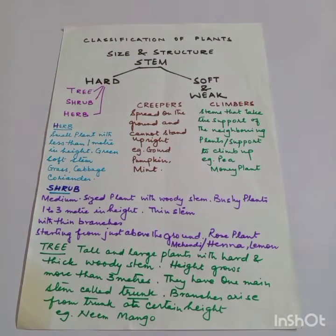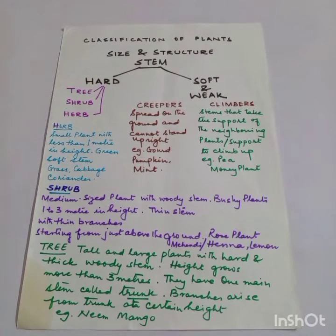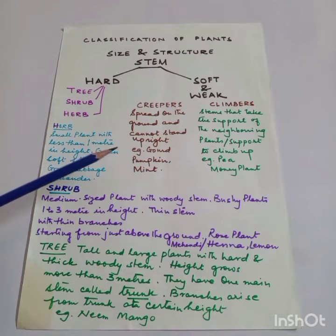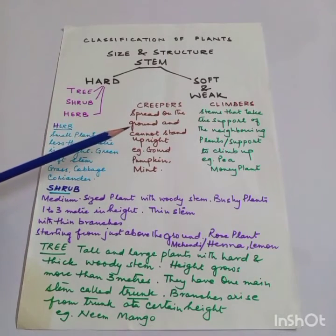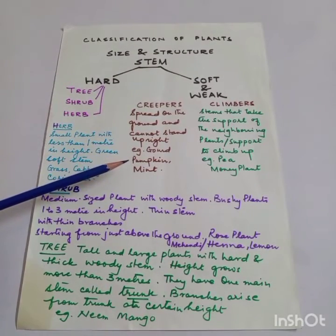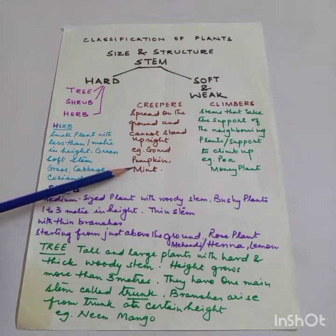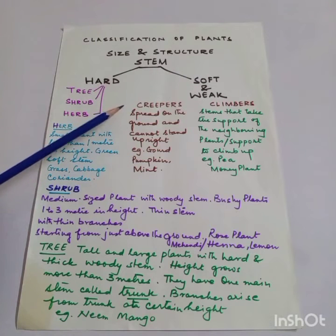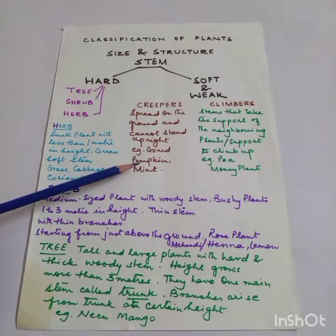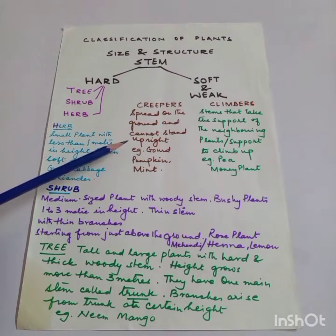Plants with soft and weak stems are called creepers. Creepers stay on the ground and do not climb upward, because they usually bear very heavy fruits — they spread on the ground and cannot stand upright. Examples include bottle gourd (lauki), pumpkin, sitafal, and mint (pudina). These plants stay along the ground and keep spreading on it. If a creeper were to climb up and bear a large fruit like pumpkin or watermelon, it would break — that is why they remain on the ground and their fruits grow on the ground.